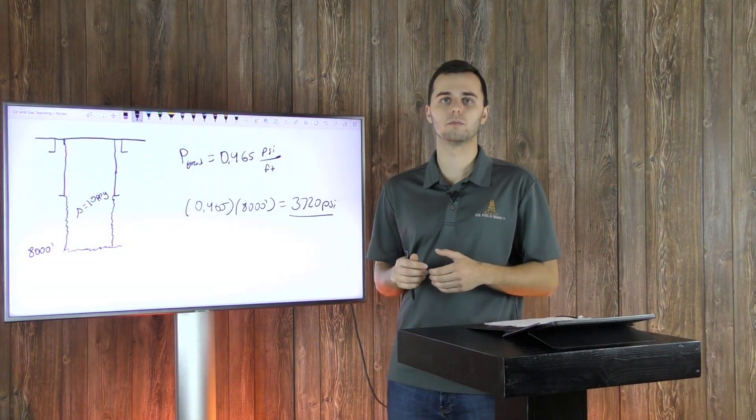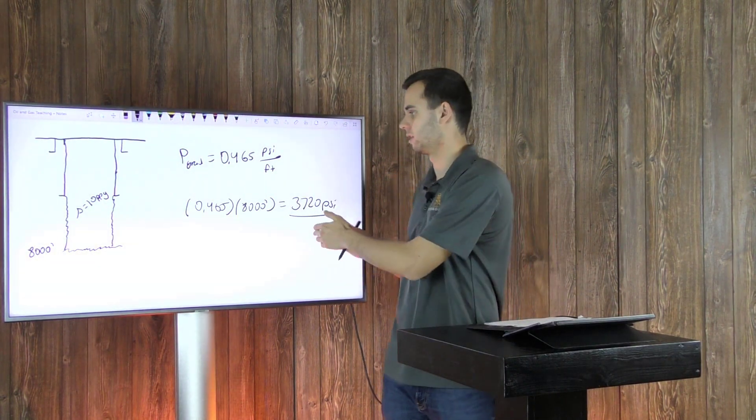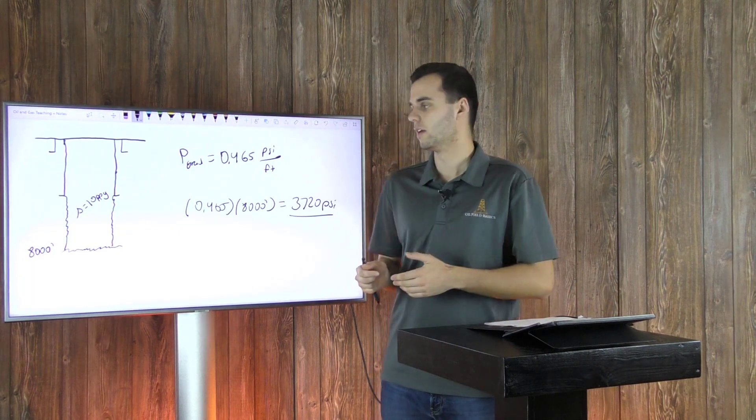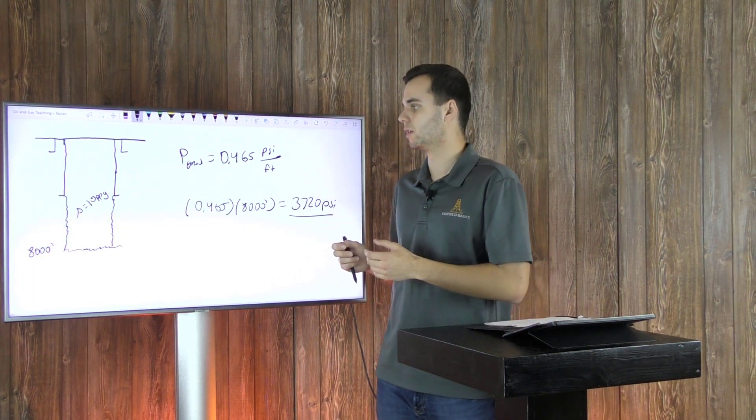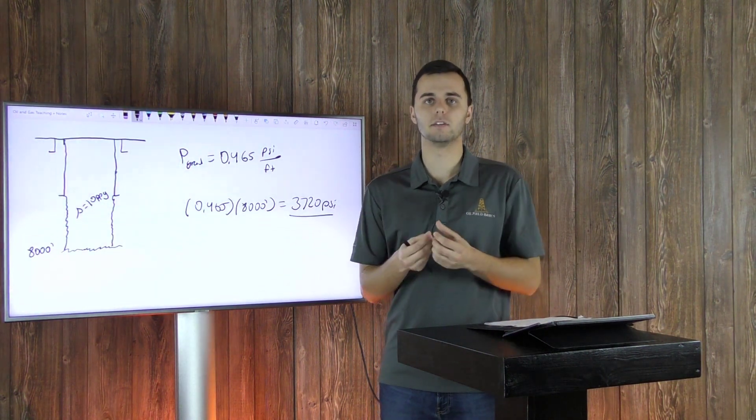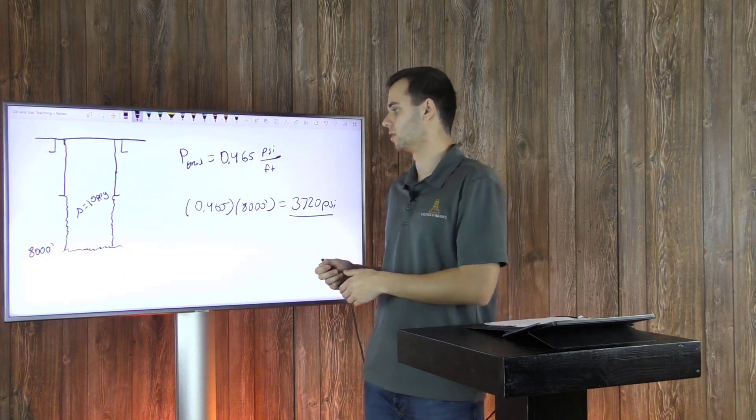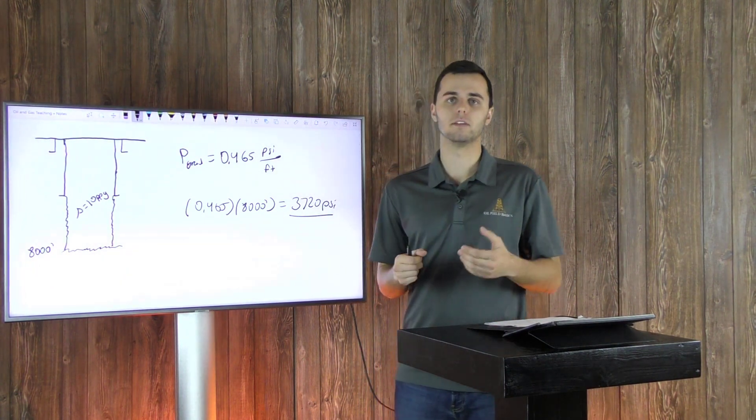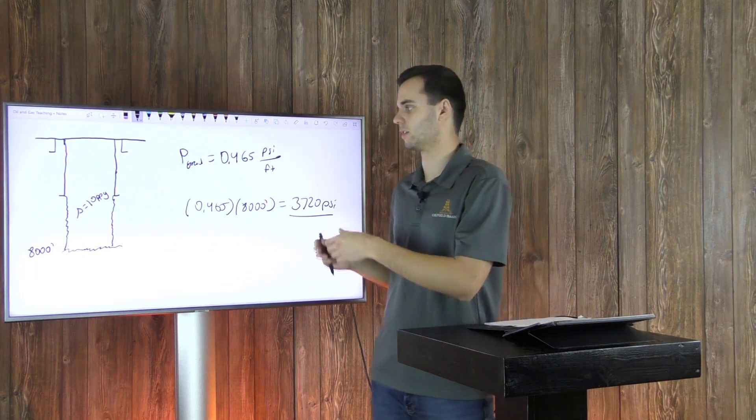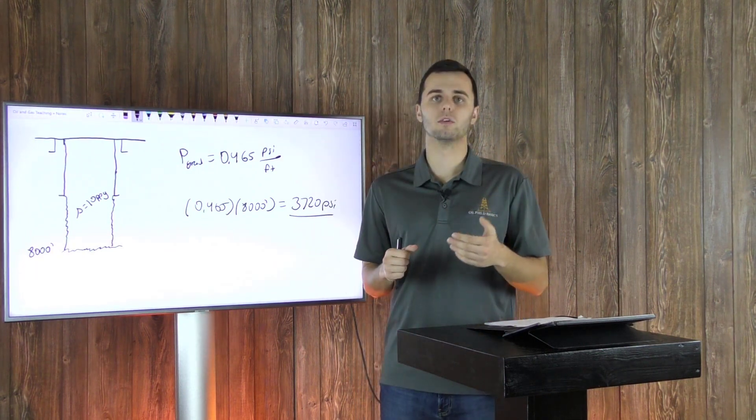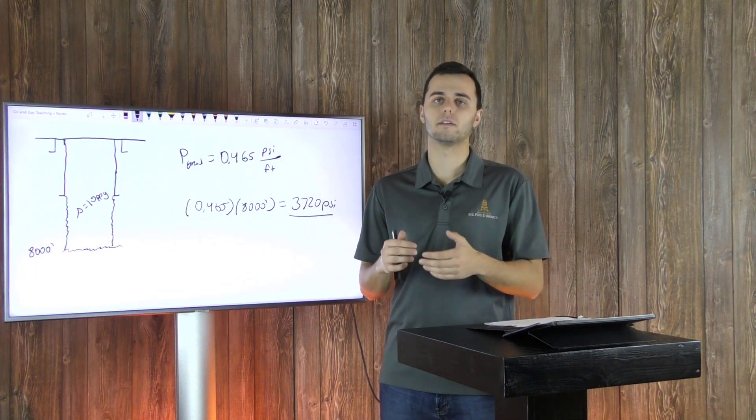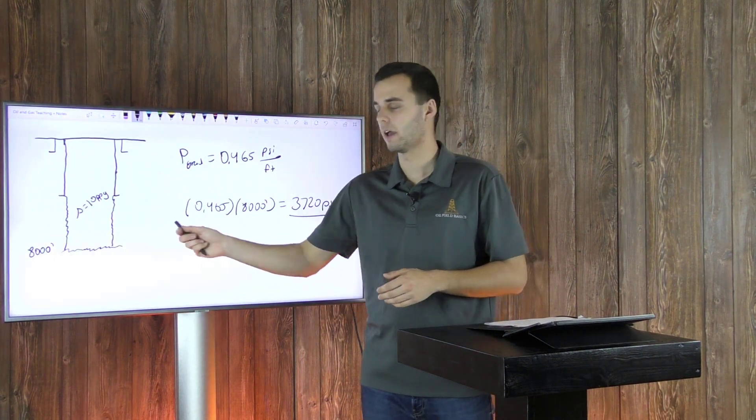So as you conclude, the pressure exerted by your mud has to be greater than this, because if it is not, then this could lead to a kick to enter the wellbore. And this could happen if your formation pressure is greater than your mud weight pressure exerted on the formation. So now let's determine what the mud weight must be to not fracture your formation at 8,000 feet.